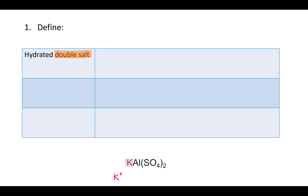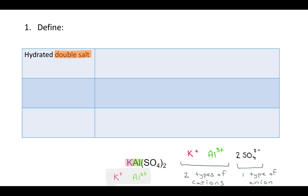With a double salt, you have two different types of cations. In the example shown, you could also have two different types of anions. For example, here you have potassium with a +1 charge and aluminum with a +3 charge, and then sulfate as the anion. So you have two types of cations and one type of anion — those two different types of cations are what makes this a double salt. In a normal salt, you have one type of cation with one type of anion.